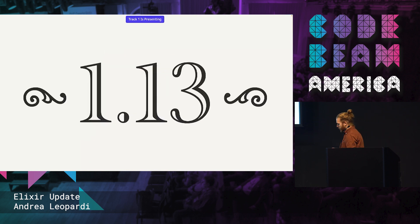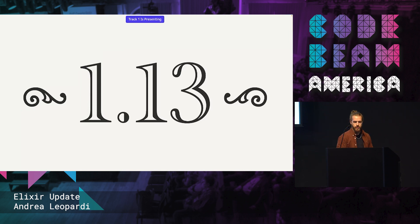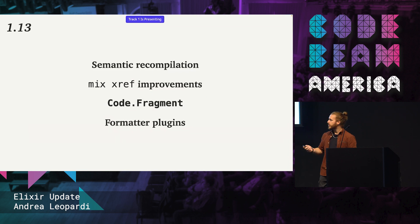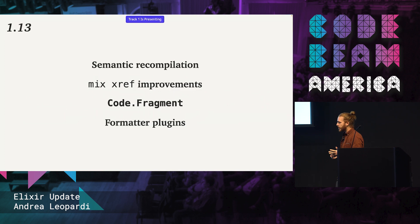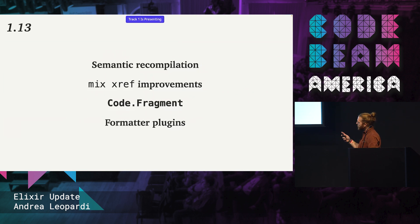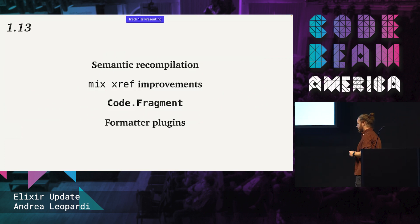The last release before this one was 1.13, released in December 2021, so almost a year ago now. It was very focused on developer experience. Major features there were semantic recompilation — just smarter recompilation to make recompiling projects a little bit faster, mostly by recompiling less stuff. There were also a bunch of improvements in MixRef, which is a tool to see dependencies between modules at compilation time, like compile-time dependencies and graphs for your codebase.